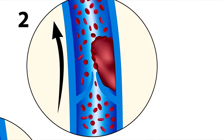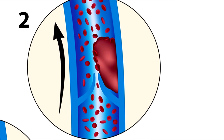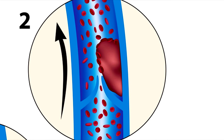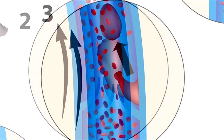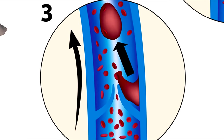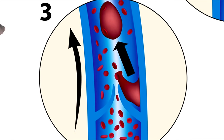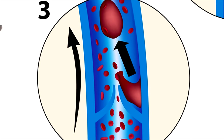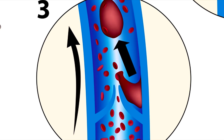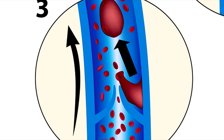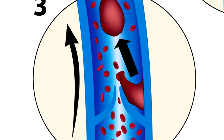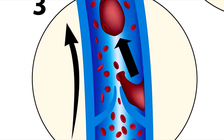Unfortunately, this clot is going to continue to grow. In illustration labeled as two, you can see it growing. Then in picture three, it's going to break off and enter into circulation. Wherever it is in the vein, it will flow with the blood flow back to the heart via the venous system. This clot that broke off can flow to the heart, enter into the pulmonary circulation, and become a pulmonary embolism, causing serious health issues.